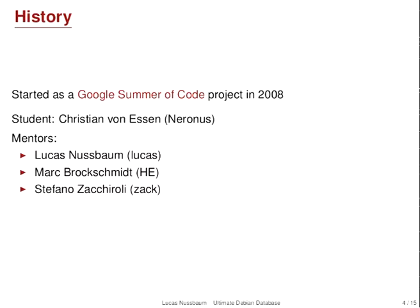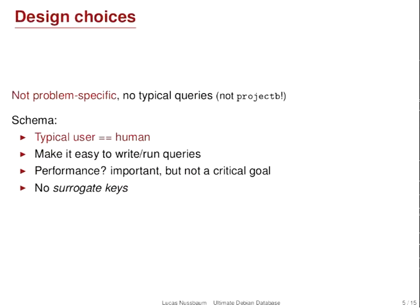It started in 2008 as a Google Summer of Code project. The student was Christian von Essen, who left after the project. We were three mentors at the time with Mark Borgschmidt and Stefano. A few slides about design choices in UDD.